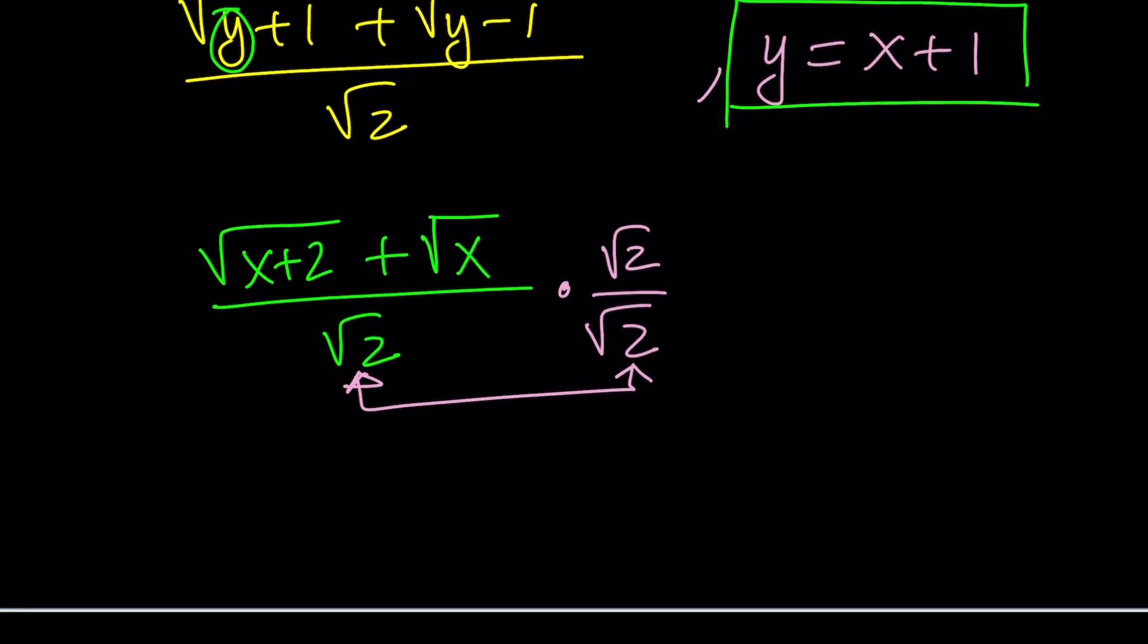We want to rationalize the denominator. And this 2 will be distributed inside. So, it's going to be like square root of 2x plus 4 plus the square root of 2x all over 2. Of course, you want the denominator to be rational. That's why we call it rationalizing the denominator. Make sense? So, that's the answer in the simplest form.